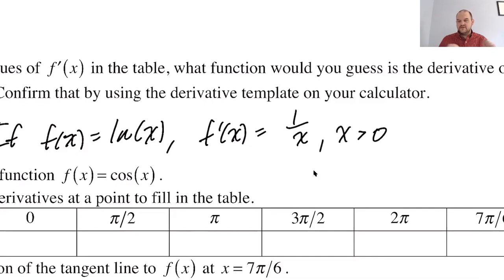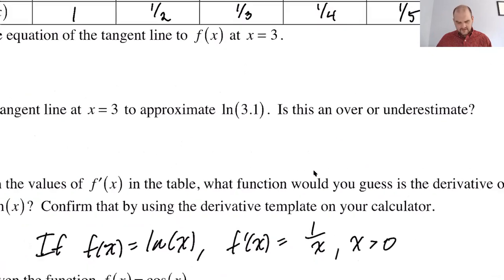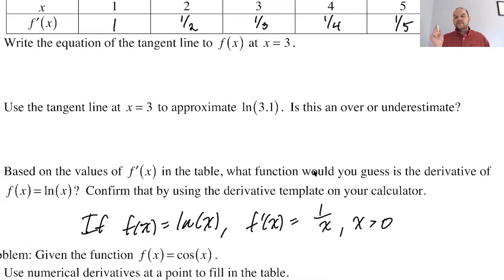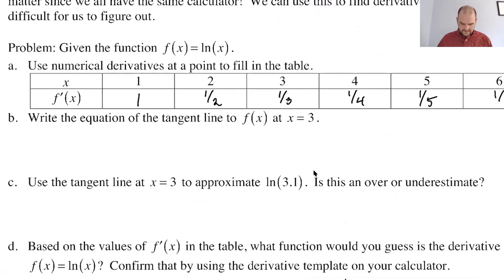Like, if the domain of the function is all reals, but then the derivative, when you try to do that limit, just doesn't work at two, then the domain of the derivative would be all reals except two. It's a smaller domain. The domain of the derivative can be at most the domain of the original function.